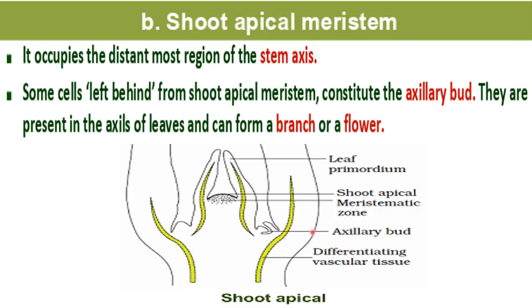To make the shoot apical meristem diagram: first make the tip, then the leaf primordium on both sides. In the axil of leaf, show the axillary bud on both sides. Then make the differentiating vascular tissue. Make this diagram also in your notebook.